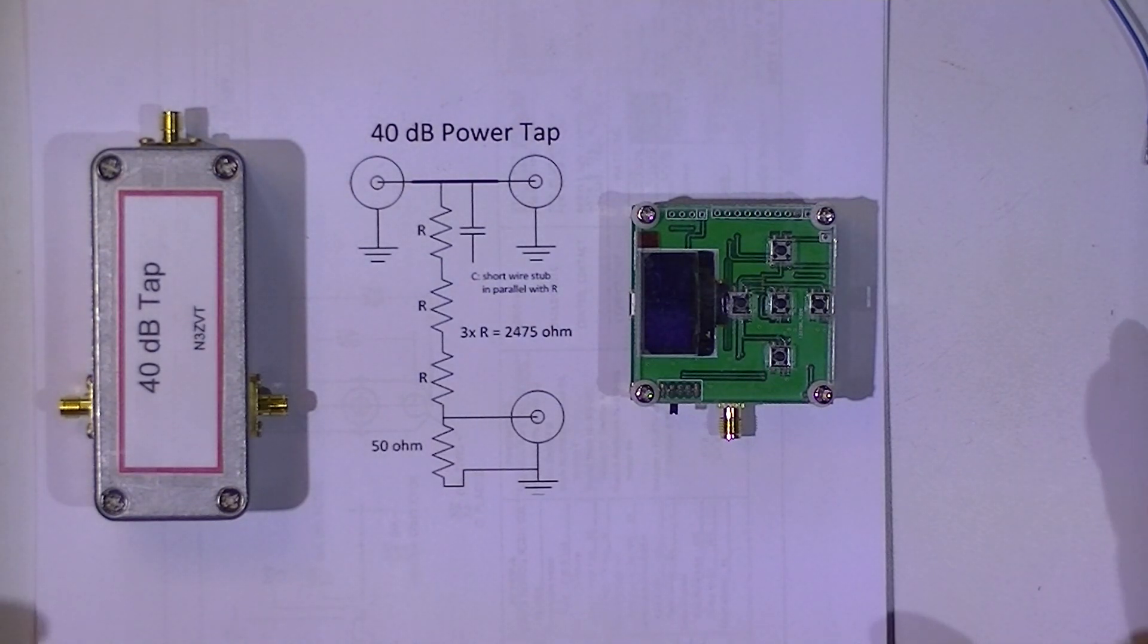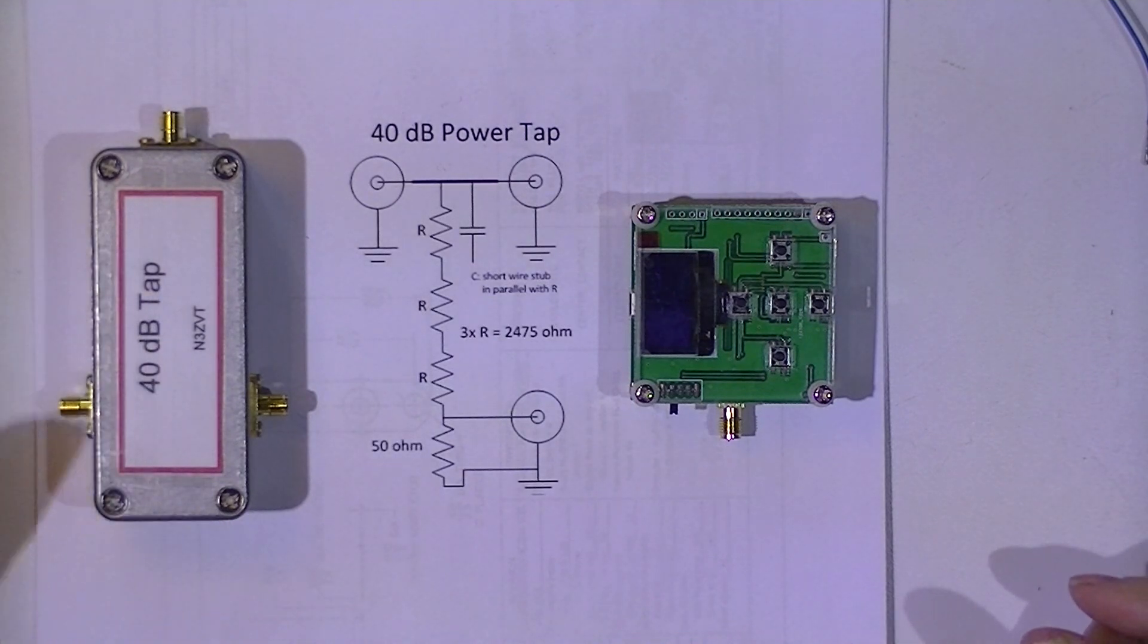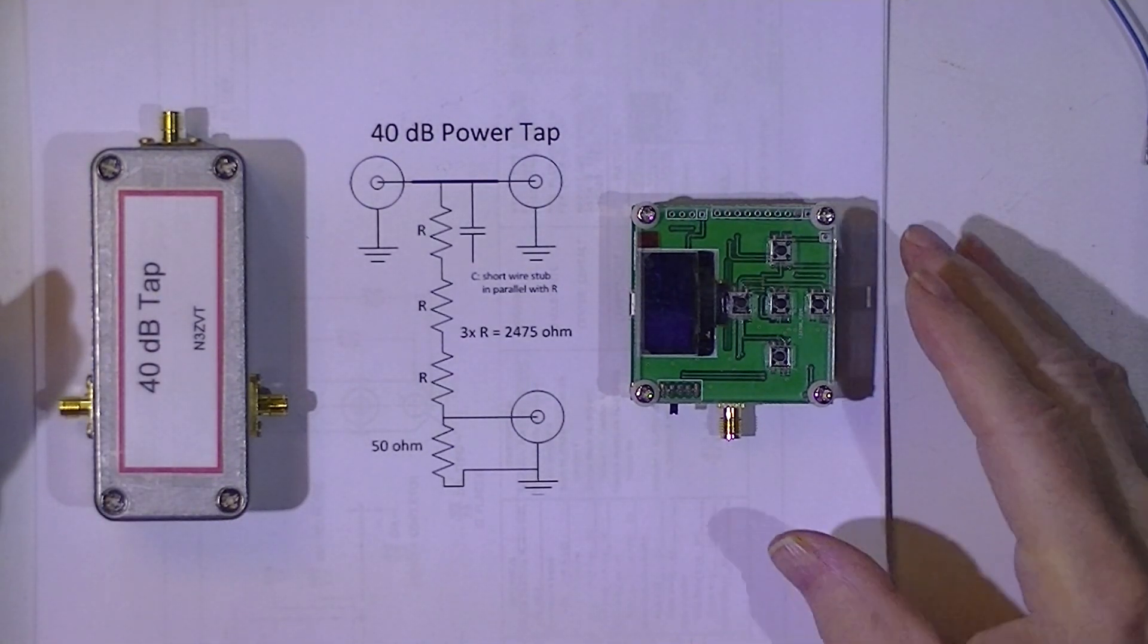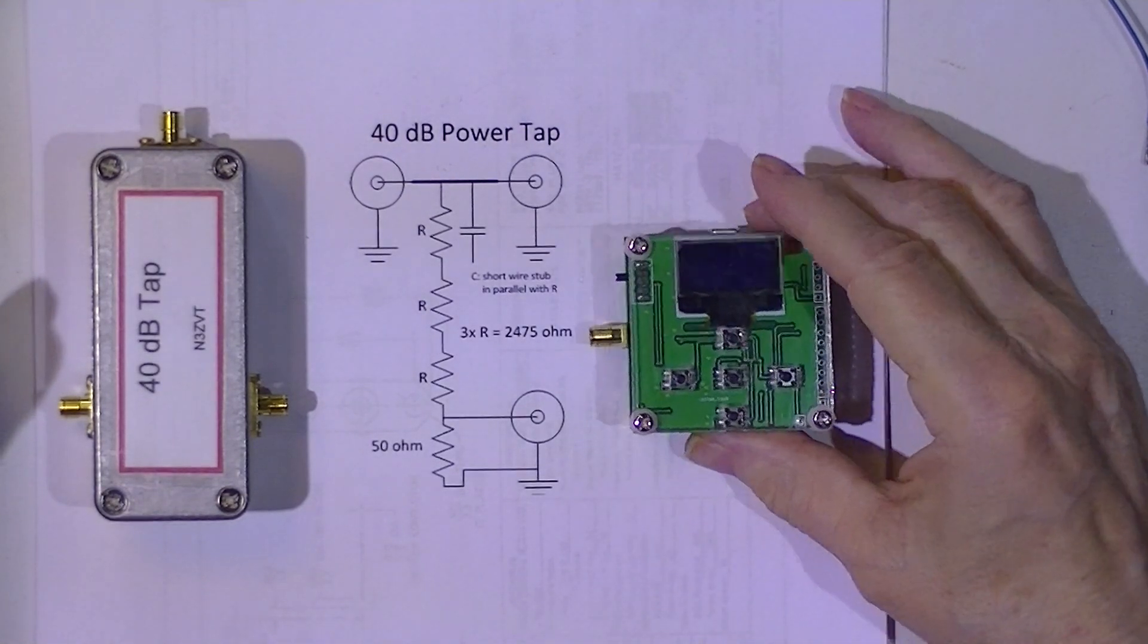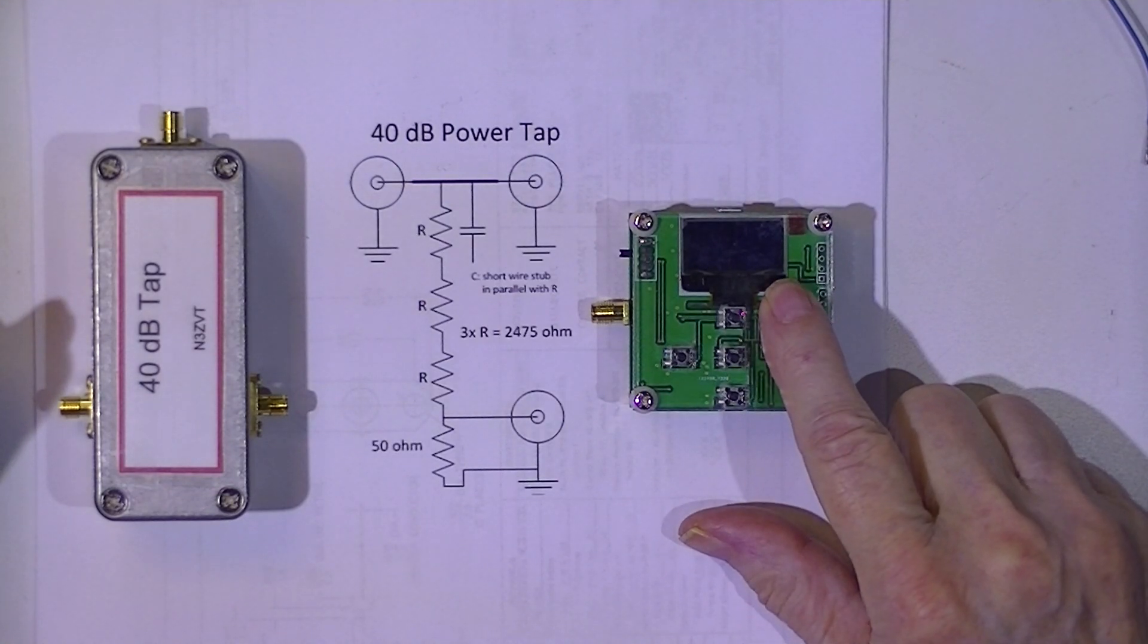This is going to be part 3 of this 40 dB power tap series, in which I'll first inject the signal into this OLED wattmeter and adjust the level of the signal to 0 dB.